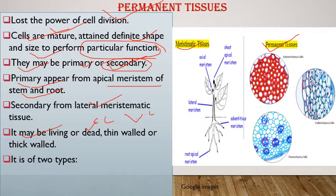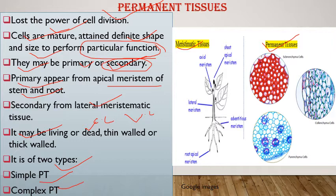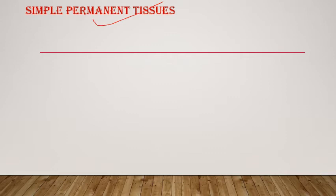Permanent tissues are of two types as seen in the flowchart: simple permanent tissue and complex permanent tissue.